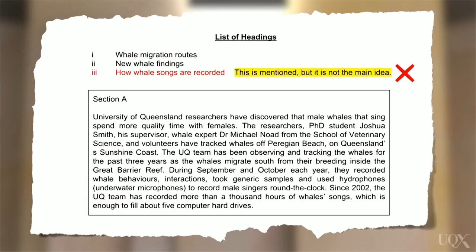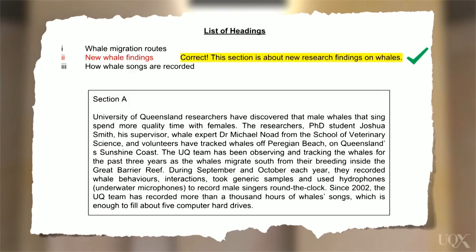Similarly, option 3 is not correct because, again, how whale songs are recorded is mentioned in the text, but this is also not the main idea of the paragraph. In this case, option 2 is the correct answer — this heading best summarises the main idea of the paragraph. Now it's your turn to practise matching the correct headings to paragraphs.